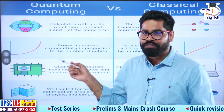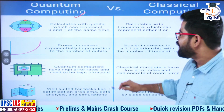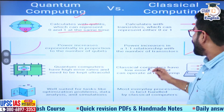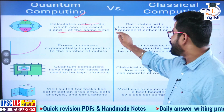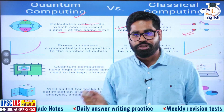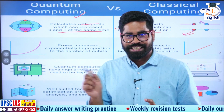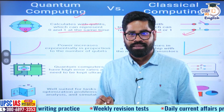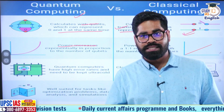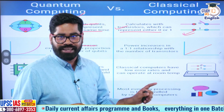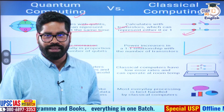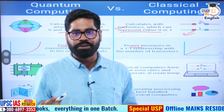Just to give you a comparison: quantum computing calculates with qubits, which can represent any value between 0 and 1 at the same time. Classical computers work with transistors, which can represent either 0 or 1. Qubits can exist in multiple states at the same time — that is quantum superposition. Also, in quantum computing, power increases exponentially as we increase the number of qubits, whereas in classical computers, power increases in a linear fashion — a one-to-one relationship.